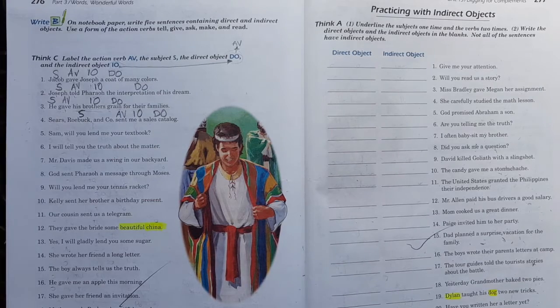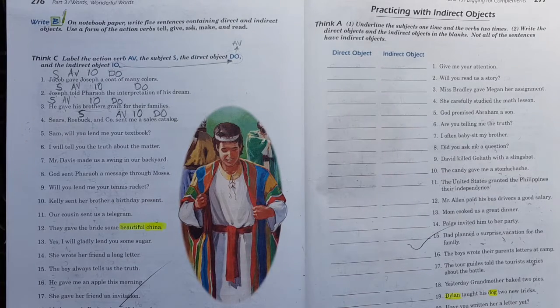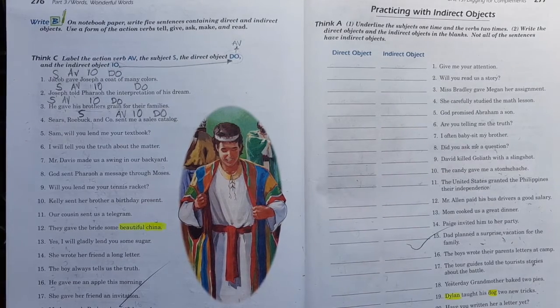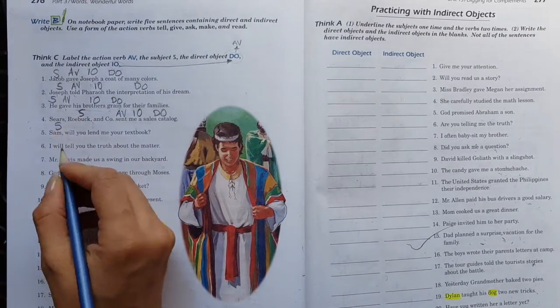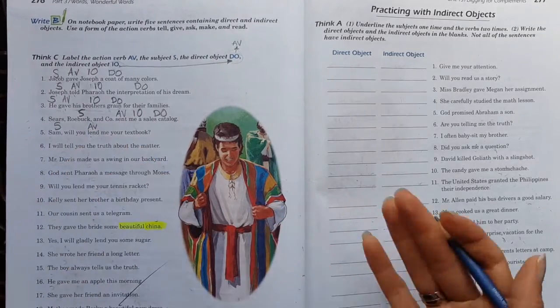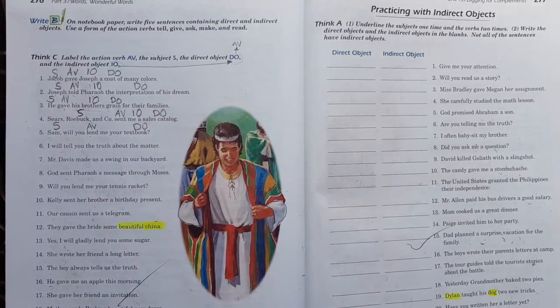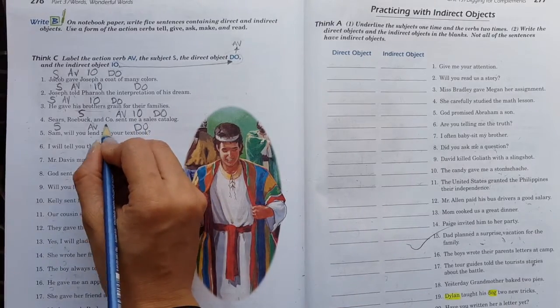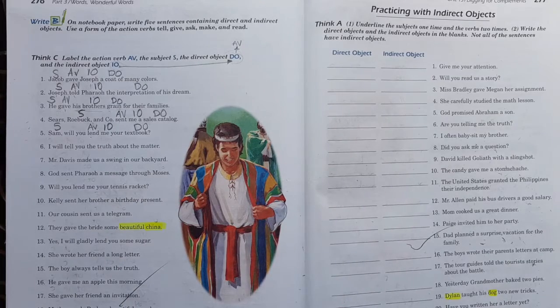Recuerda que, generalmente, entre el action verb y el objeto directo, en la mitad está el objeto indirecto. Número cuatro. Sears, Roebuck & Co. send me a sales catalog. Estas son tiendas. Ellos, fueron los sujetos, enviaron. Ese es el action verb. ¿Qué enviaron? Un catálogo. ¿Y a quién se lo enviaron? A mí.